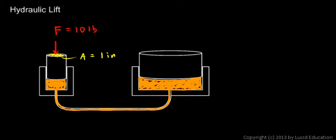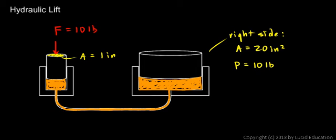Now, let's suppose that over here on the right side, which we could think of as the output side, the area is 20 square inches. You can think of the math pretty easily. If the pressure is 10 pounds per square inch, and there are 20 square inches, just think of that: 20 square inches and 10 pounds on each of them. Then it's a force of 200 pounds.